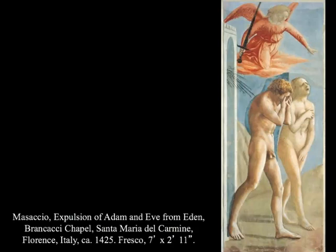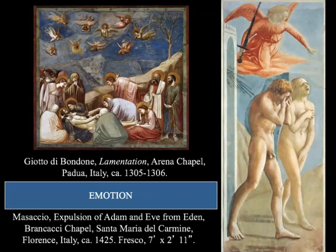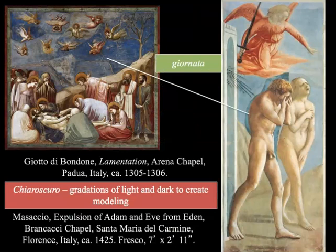The Expulsion of Adam and Eve from the Garden of Eden, also in the Brancacci Chapel, becomes very famous for its extreme emotion. You have Adam and Eve being cast out into the desert, and you can see the intense emotion on both their faces — they have this downcast and extreme sadness moving into the landscape.